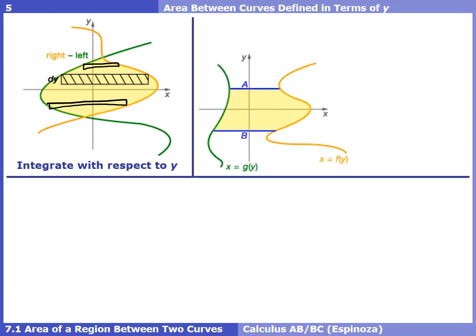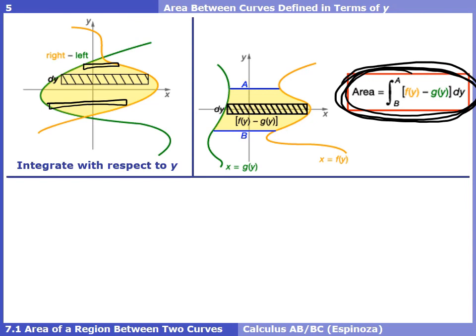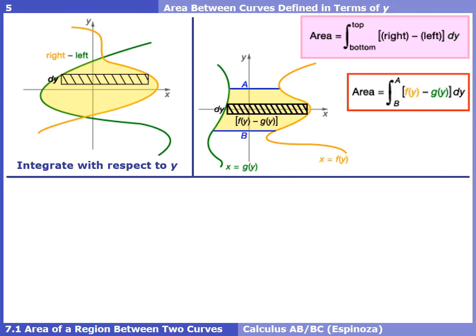Let's set this up. Calling the orange function F and the green function G, the length of the horizontal representative rectangle is the right function minus the left function (F − G), and we integrate from A to B. Rather than memorizing the formula, use the words: integrate from a bottom bound to a top bound of a right function minus a left function, doing everything with respect to y.